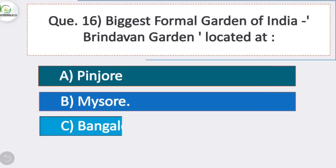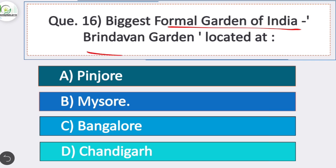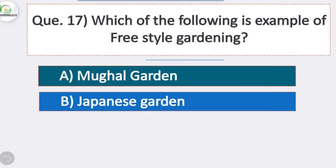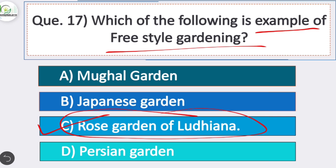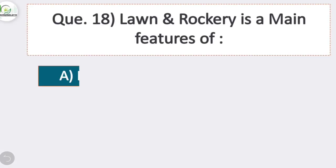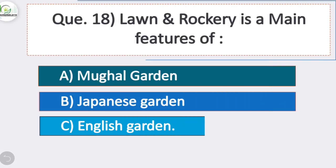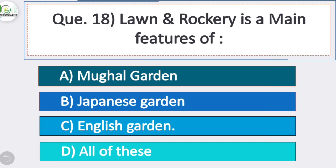Question 16: The biggest formal garden of India — Vrindavan Garden — is located at Mysore. Question 17: Which of the following is an example of freestyle gardening? Option C is correct — Rose Garden of Ludhiana. Rose Garden of Ludhiana is an example of freestyle gardening. Freestyle gardening means a combination of both formal and informal style.